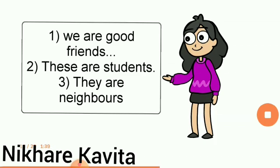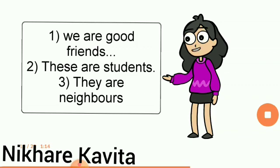Now, these are some sentences on are. See these sentences carefully. First one is: we are good friends. Number 2, these are students. Number 3, they are neighbors. So, dear students, what you observe here is that the word are is used with a noun in the plural number. Like, we are, they are, and they are.